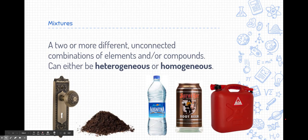What about mixtures? Mixtures are two or more different, unconnected combinations of elements or compounds. So these ones are not chemically bound to each other. They can either be heterogeneous or homogeneous-style mixtures, which we'll talk about in the next few slides.